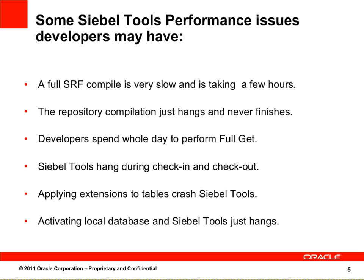Also, check-in and check-out — it really depends on how large your object is, but if a check-in and check-out takes hours, that's a performance issue. Applying an extension and doing a data schema change: a lot of times you cannot finish the schema change. When you apply the extension table to your base table, you will see your CBO Twisters crash — that's definitely a Twisters performance issue. And also, when you're activating a local database, CBO Twisters hangs. Those are some examples of CBO Twisters performance issues.